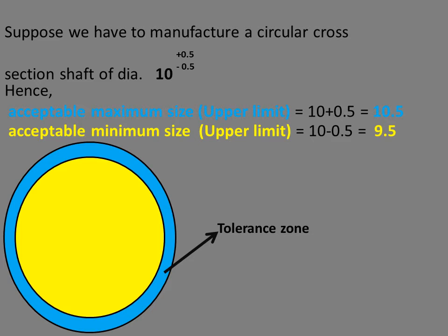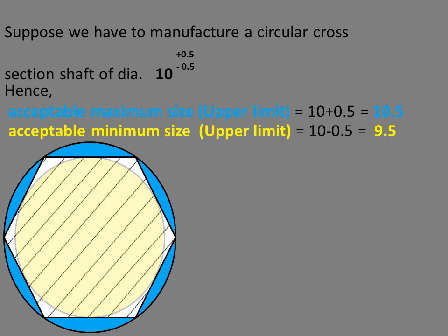Now this blue ring is showing the tolerance zone. This is the cross-sectional view of the shaft which is lying in the blue ring, meaning it is within limit. Hence, as per dimensions it is correct, but as per geometry it is not.